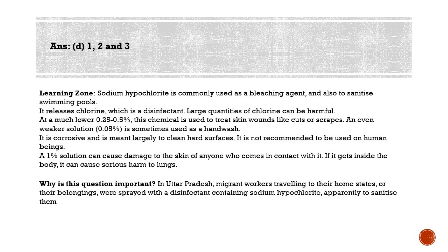Sodium hypochlorite is commonly used as a bleaching agent and also to sanitize swimming pools. It releases chlorine, which is a disinfectant, though large quantities of chlorine can be harmful. The concentration varies by purpose — normal household bleach is usually 2 to 10% sodium hypochlorite solution, while at a much lower concentration of 0.25 to 0.5%, it is used to treat wounds like cuts or scrapes.